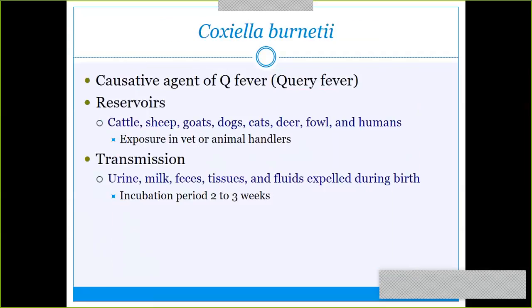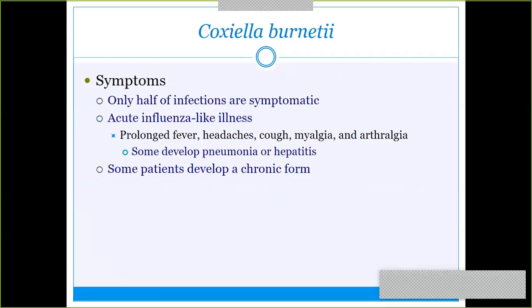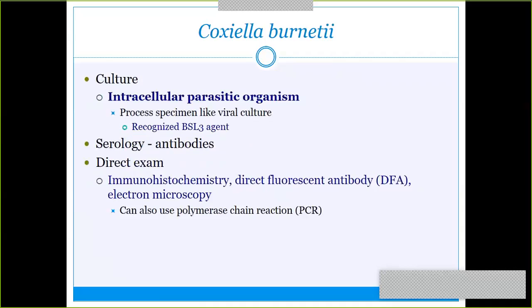Coxiella burnetii causes Q fever. It is found in various animals and can also be a reservoir in humans, so veterinarians and animal handlers are more exposed. It can transmit through urine, milk, feces, tissues, and fluids from contaminated sources. Q fever is dangerous because only half of cases are symptomatic — you could have it and not know it. When symptomatic, it causes fever, headache, and influenza-like illness. It is an obligate intracellular parasitic organism, so it won't grow on agar. Detection is via cell culture, serology for antibodies, fluorescent antibody testing, or PCR.